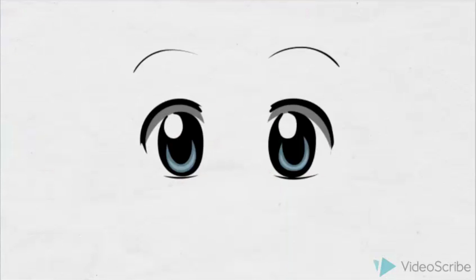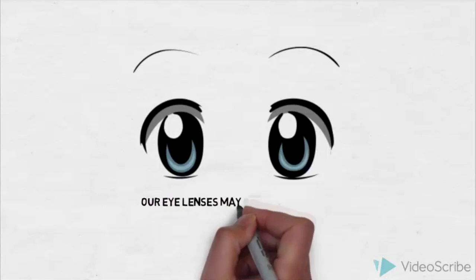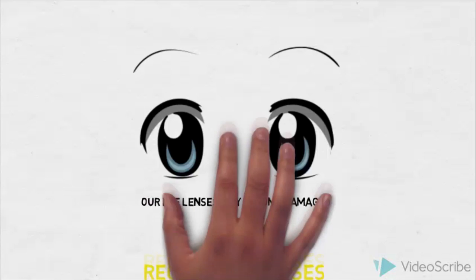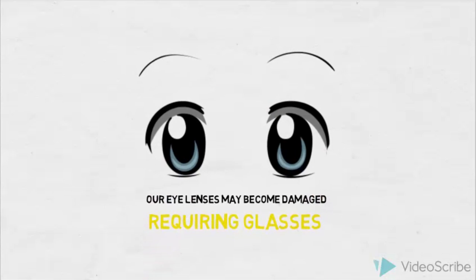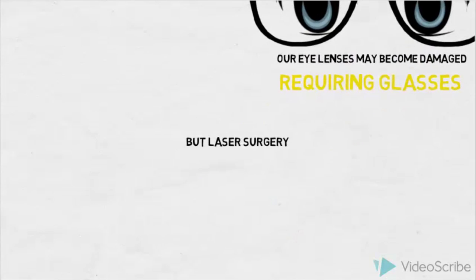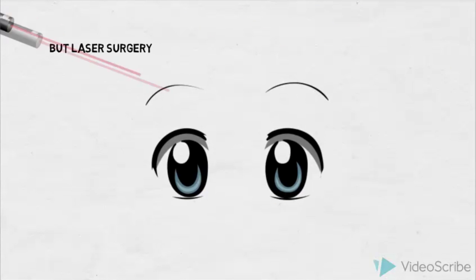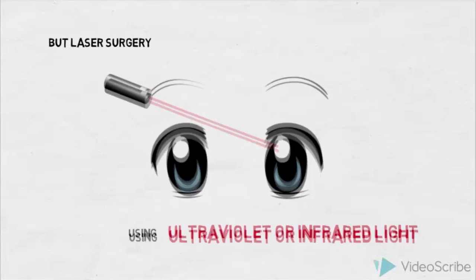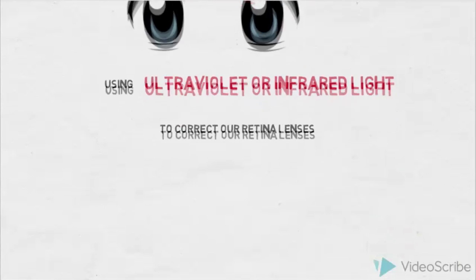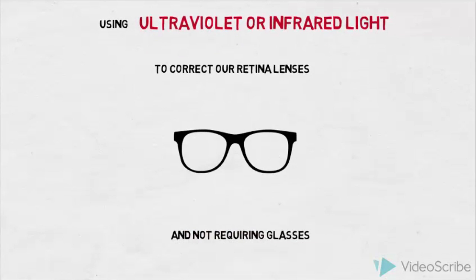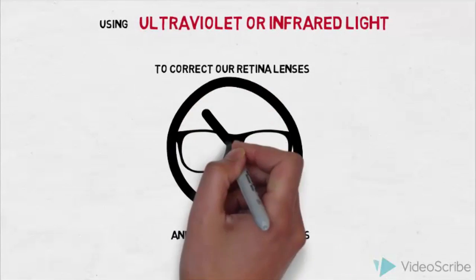Over time, an overexposure to radiation can damage our eye lenses, requiring glasses to be worn to clear our vision. But modern laser surgery, using ultraviolet or infrared rays of light, can be used to correct our retinal lenses, improving our vision and line of sight, and not requiring glasses.